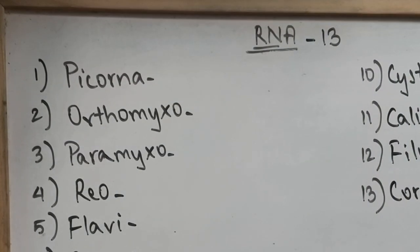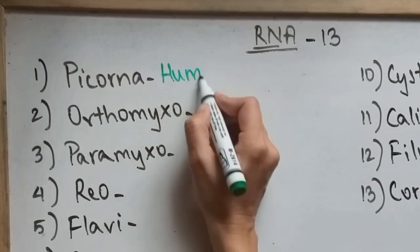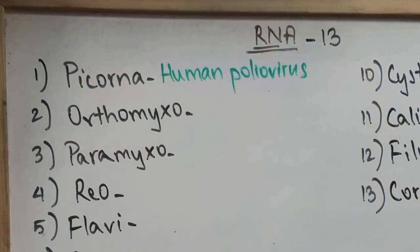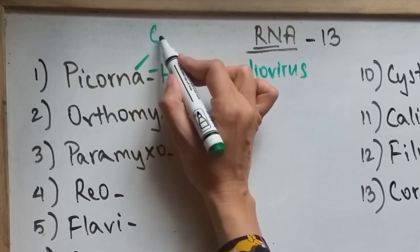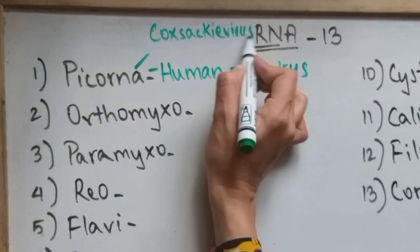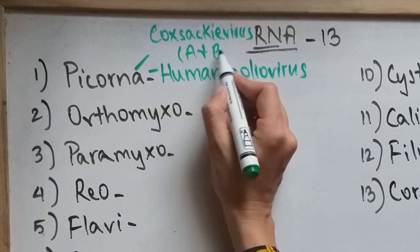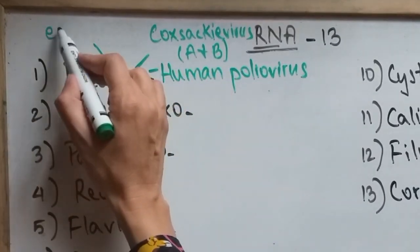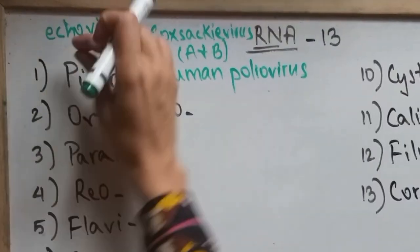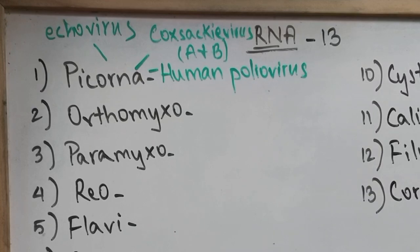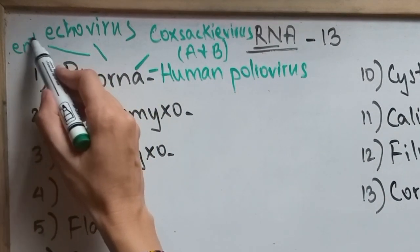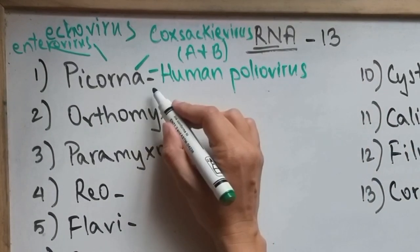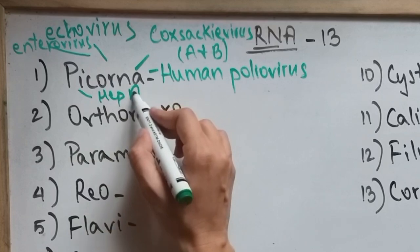Now we shall move on to the medically important viruses. Starting with Picornaviridae, we've got quite a lot: the human poliovirus which causes poliomyelitis, the human Coxsackie virus — types A and B — which cause aseptic meningitis, respiratory diseases, and enteritis. Then we've got human echovirus which causes mostly enteric diseases, and human enterovirus which causes poliomyelitis-like disease and undifferentiated fevers.